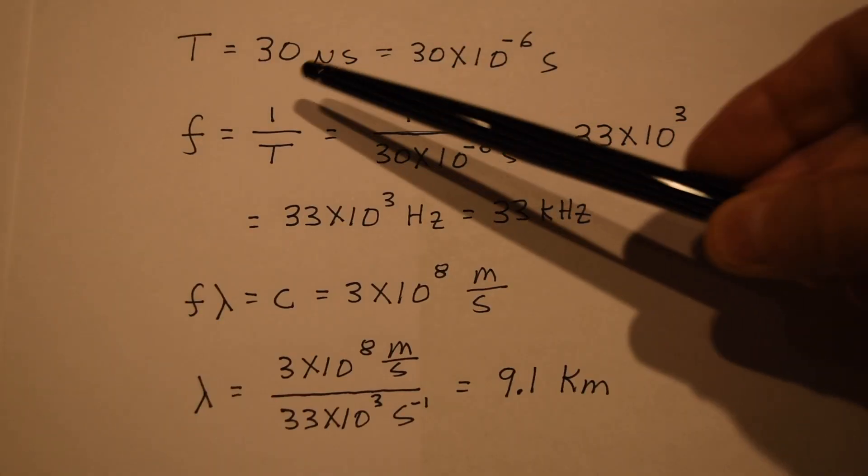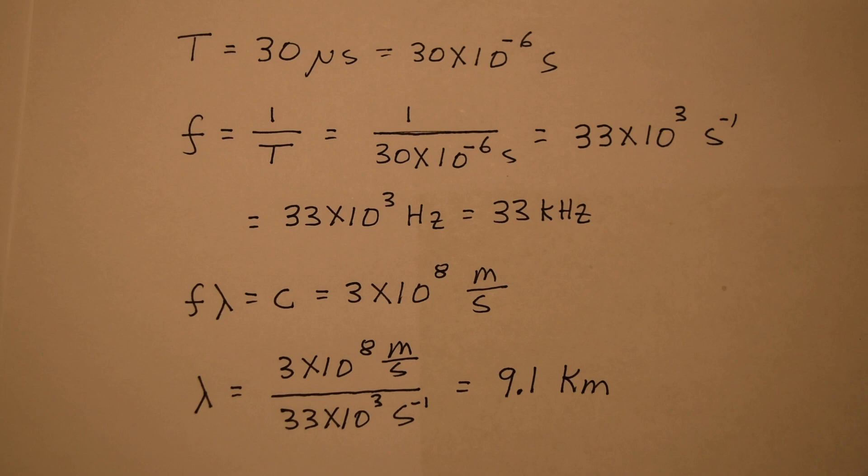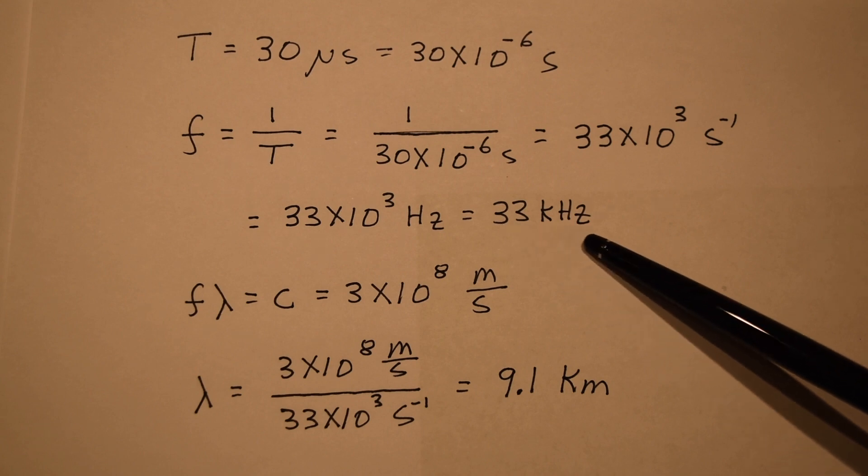A period of 30 microseconds means the electromagnetic wave coming from the plasma globe has a frequency of 33 kilohertz.